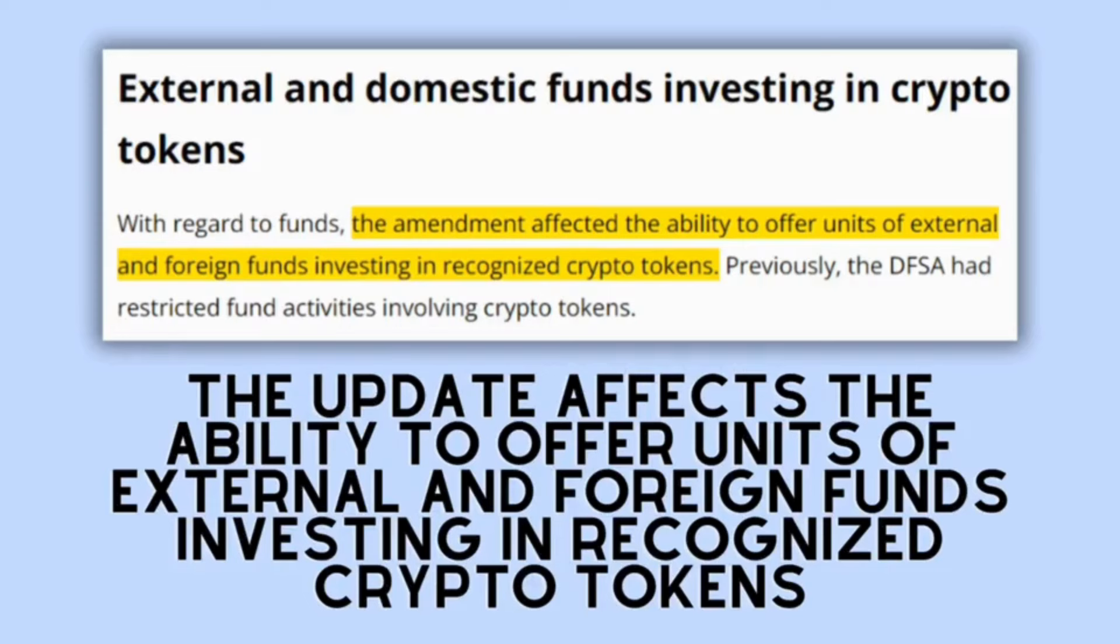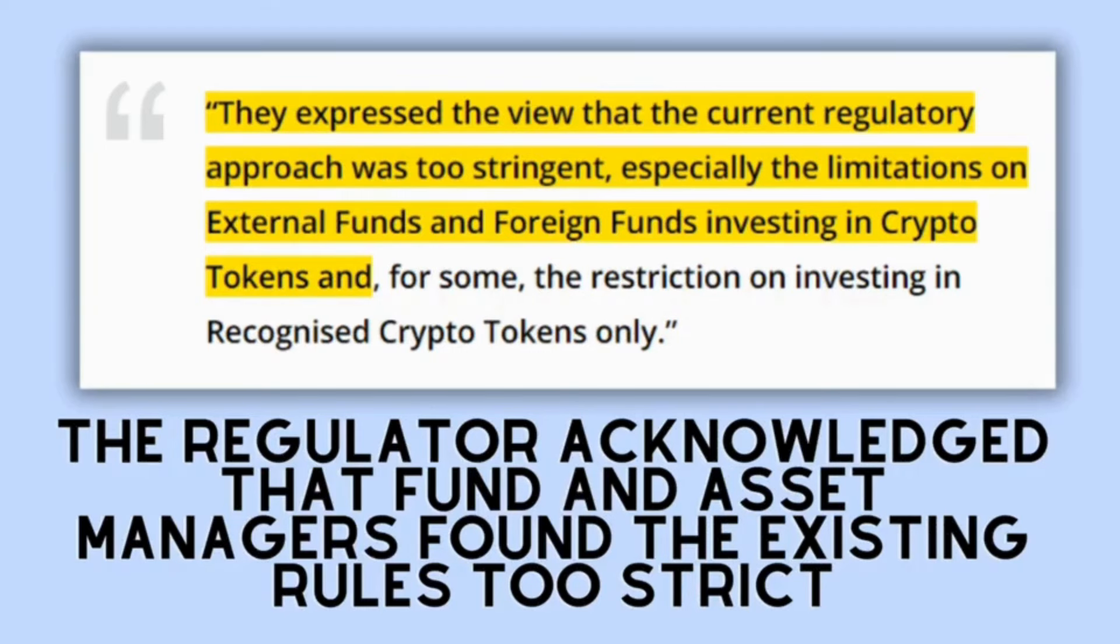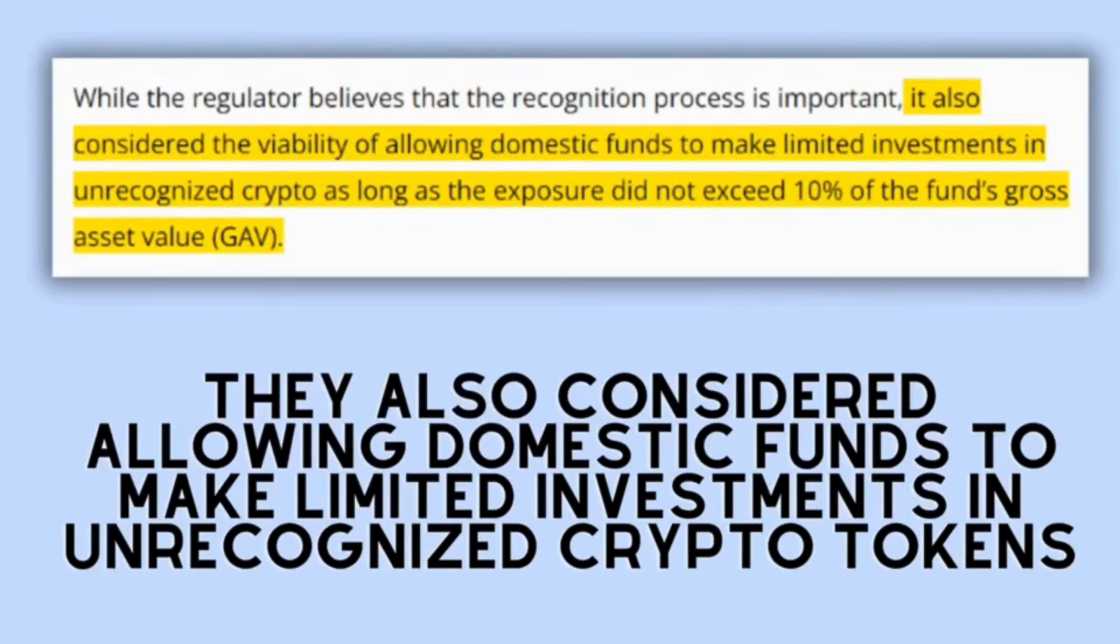The update affects the ability to offer units of external and foreign funds investing in recognized crypto tokens. Simply put, this change impacts institutions managing hundreds of millions, often billions of dollars, interested in crypto investing. In its recent consultation paper, the regulator acknowledged that fund and asset managers found the existing rules too strict. Since the regime was enacted, they were only able to invest in five recognized crypto tokens, which upset many big funds. Because five is too few.